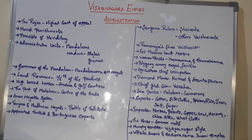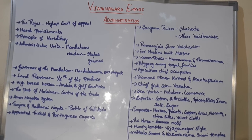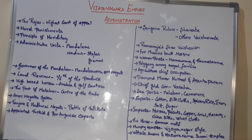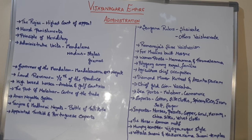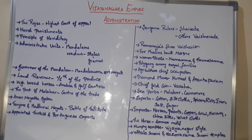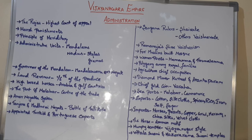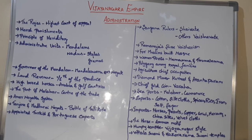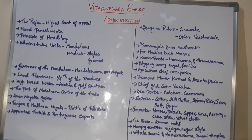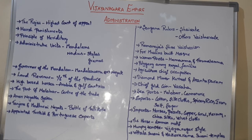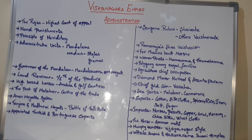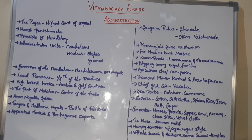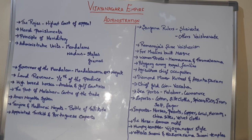Coming to the economy: agriculture was the chief occupation. The emperors provided irrigation facilities, and the Nayakas and Sarumanayankas also provided and maintained irrigation, ensuring water was properly supplied to the fields within their Arams. The Vijayanagara emperors also constructed dams. Guilds worked very excellently, and there were numerous industries that ran under guilds.